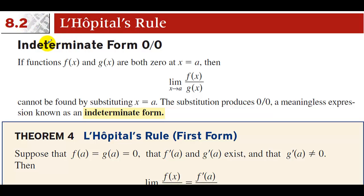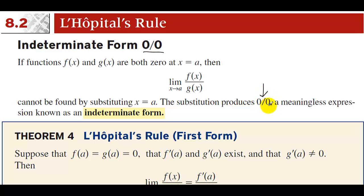This is section 8-2, L'Hopital's Rule. We're going to start with an indeterminate form 0 over 0. If functions f and g are both 0 at x equals a, then the limit as x approaches a of f over g cannot be found by substituting x equals a. The substitution produces 0 over 0, which is a meaningless expression known as indeterminate form. If you plug a value into the top and the bottom and get 0 over 0, that does not mean undefined. In limits, it is called an indeterminate form, which means we don't know what the answer is yet — it could be pretty much anything.